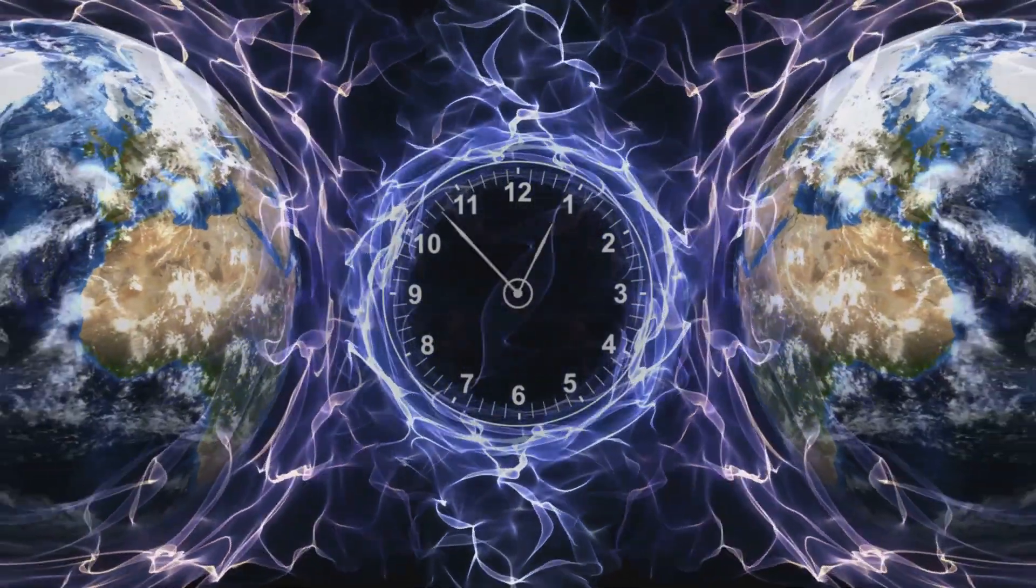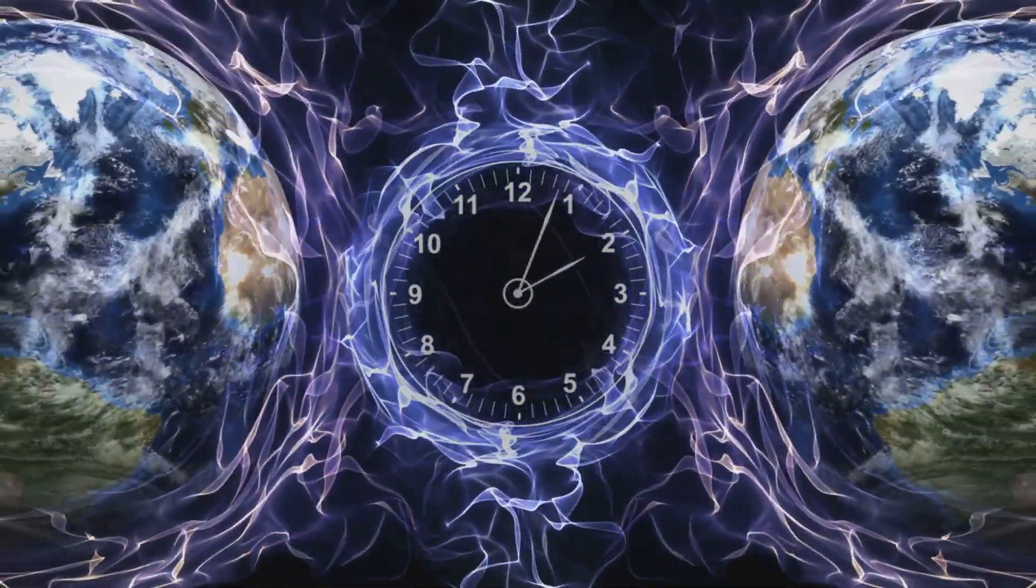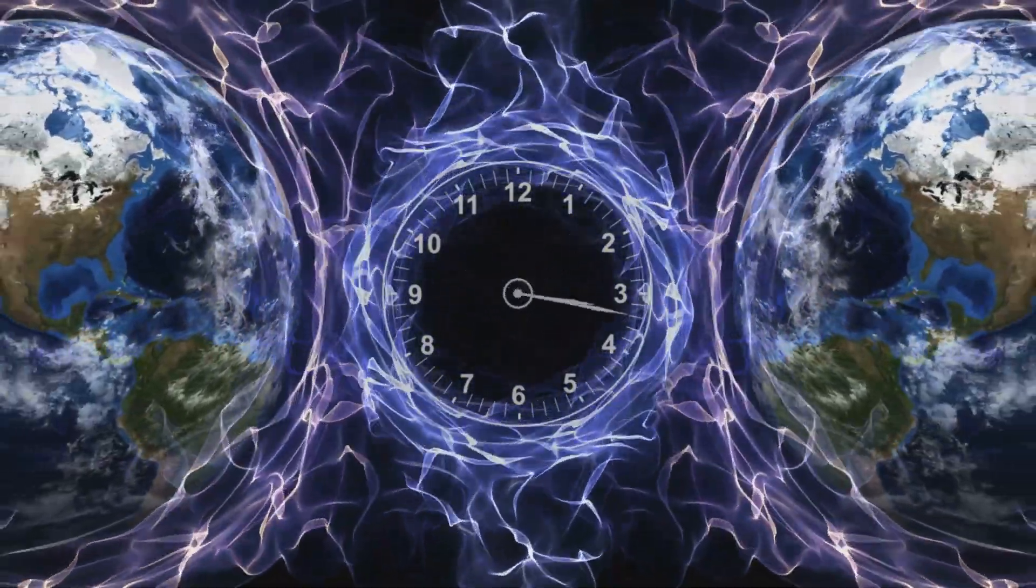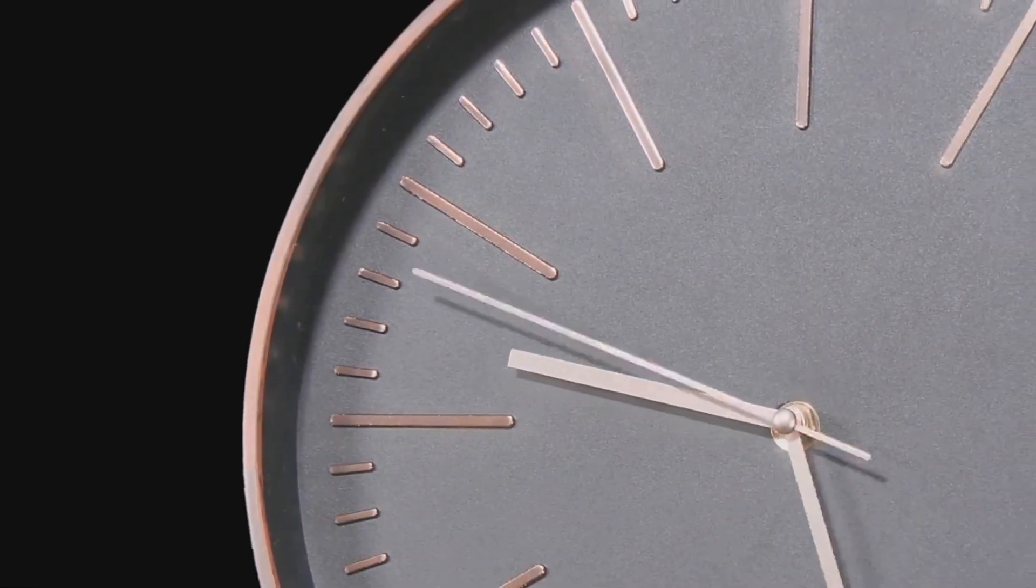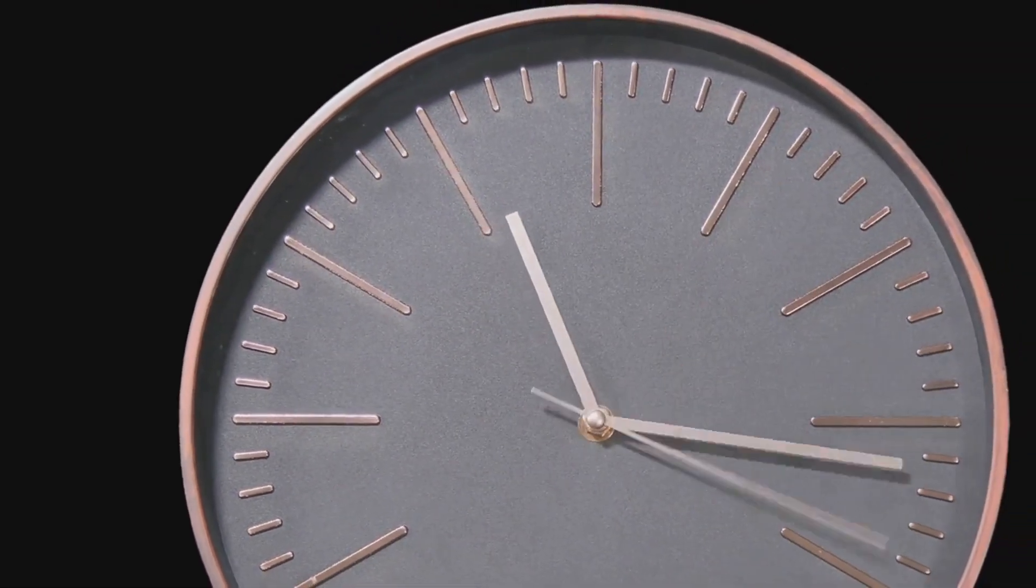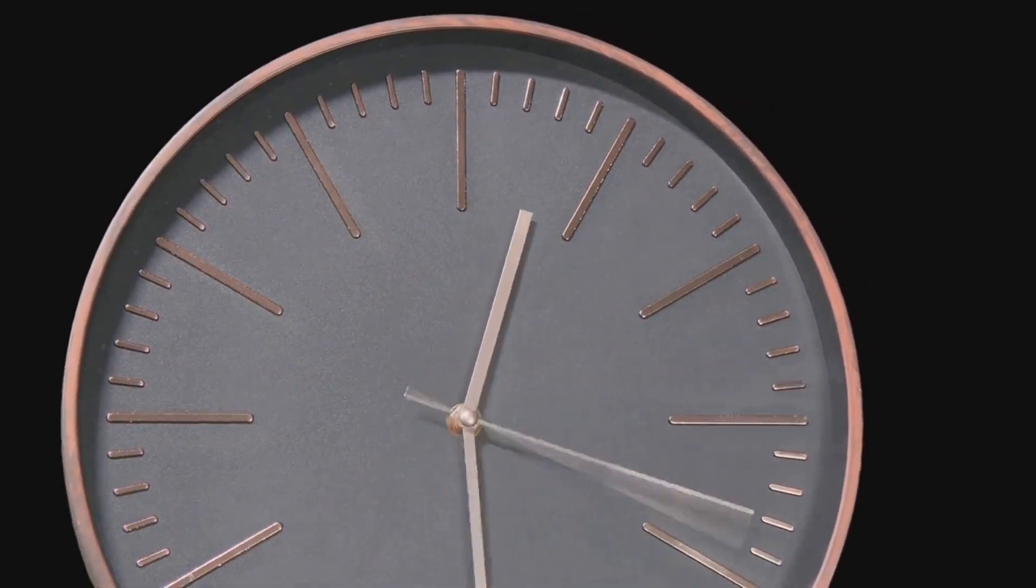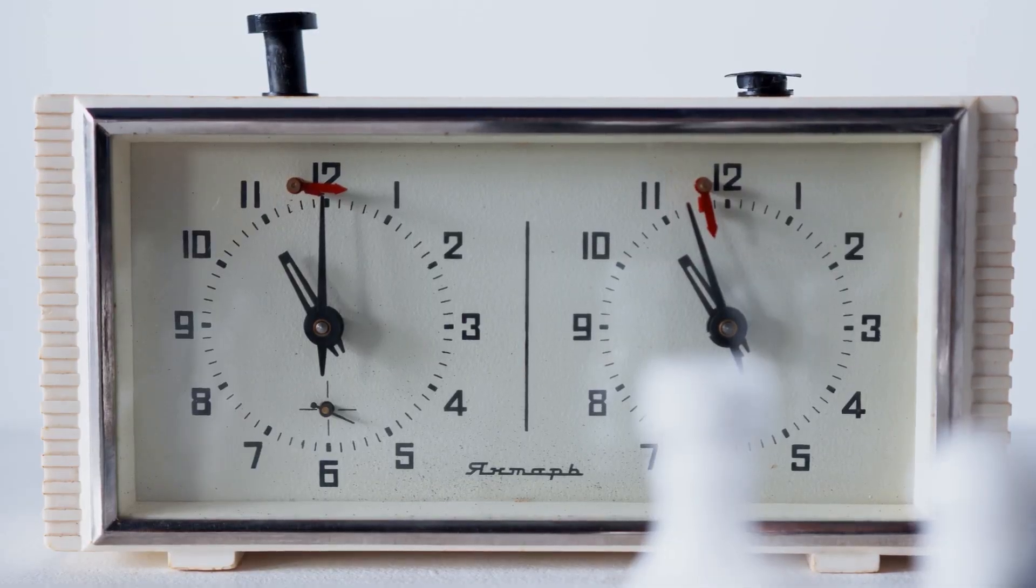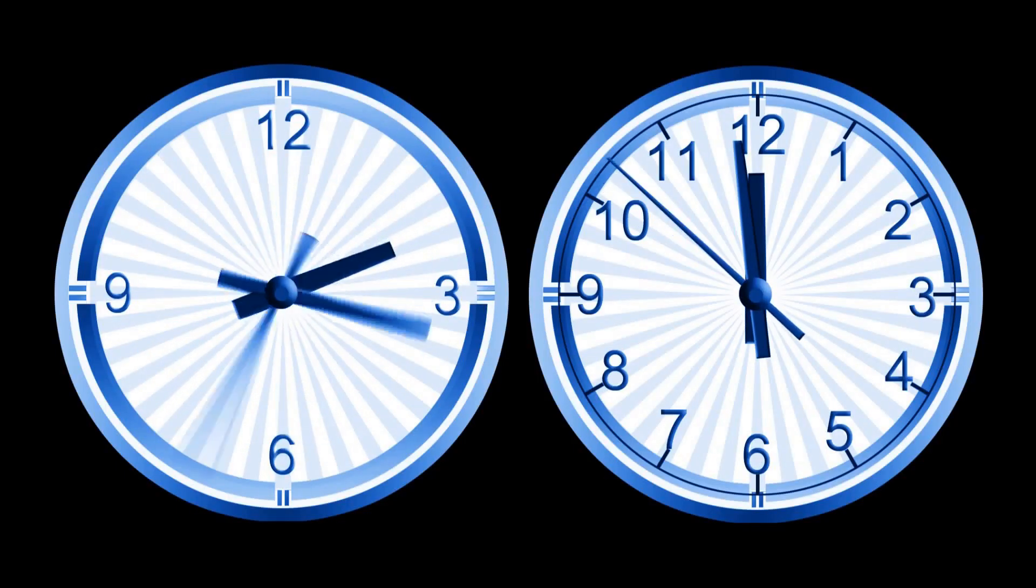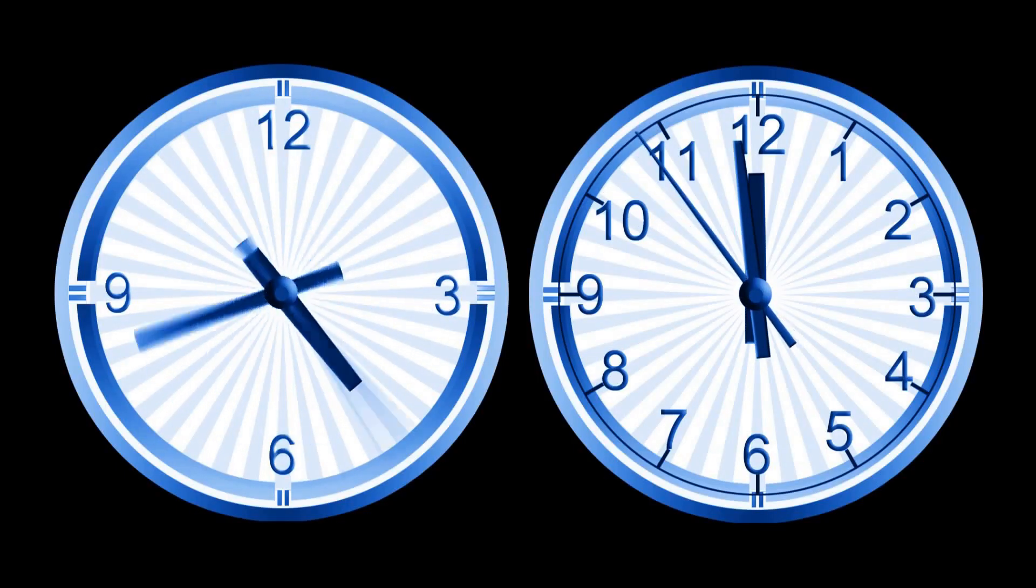Imagine two identical clocks, one here on Earth and another zooming around in space at incredibly high speeds. Einstein's theory predicts that the clock in motion will actually tick slightly slower than the one on Earth. This phenomenon is known as time dilation, and it's one of the most mind-bending consequences of relativity.